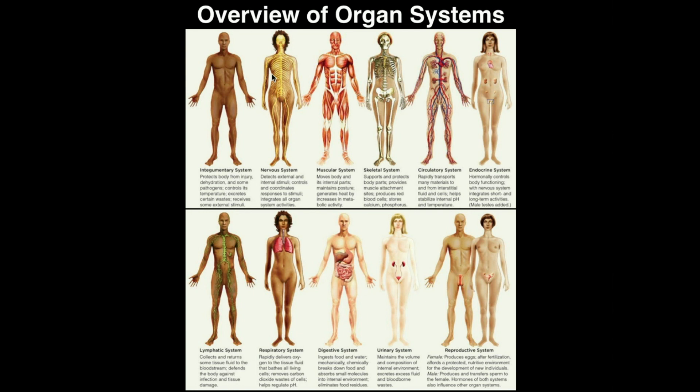When you move your arms to write on a test, that's initiated by the nervous system. We can consider the brain, the spinal cord, every neuron in your body, and all the sensory organs as part of the nervous system.